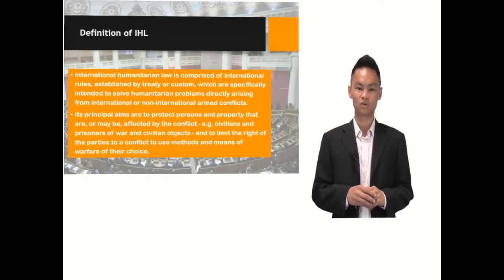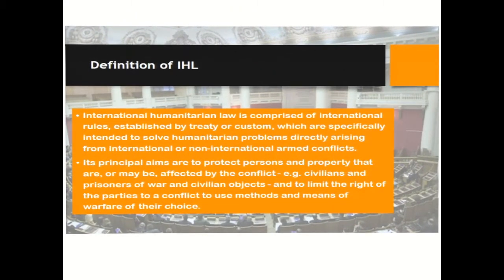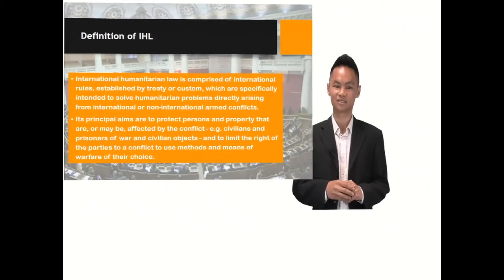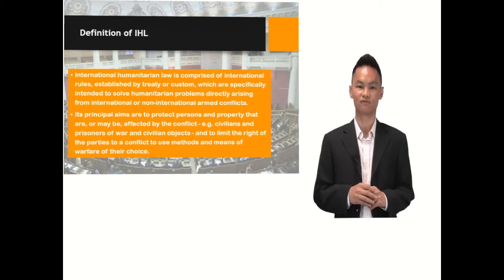International Humanitarian Law is comprised of international rules established by treaty or custom which are specifically intended to solve humanitarian problems directly arising from international or non-international armed conflicts. Its principal aims are to protect persons and property that are or may be affected by the conflict — for example, civilians, prisoners of war and civilian objects — and to limit the right of the parties to a conflict to use methods and means of warfare of their choice.